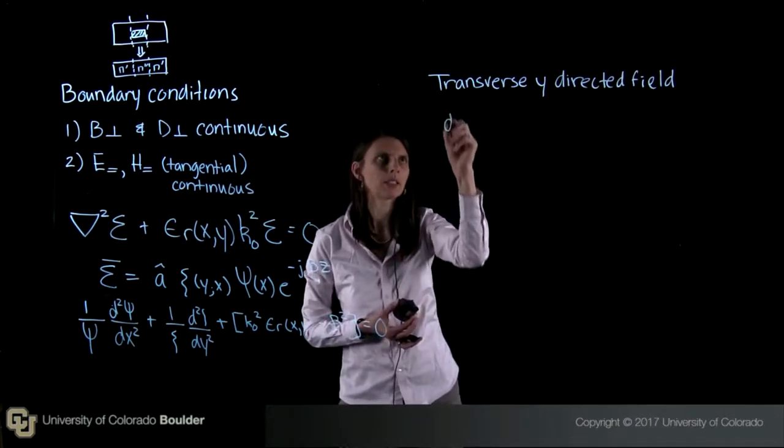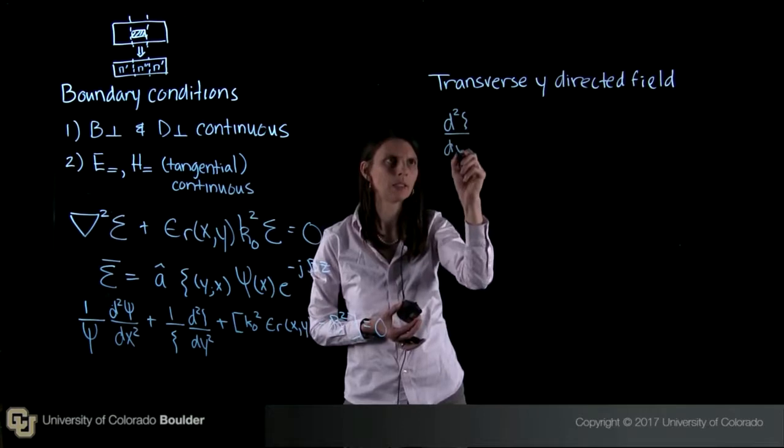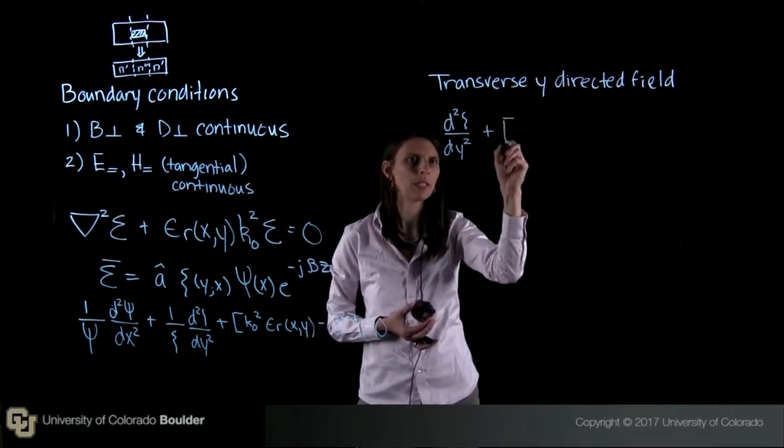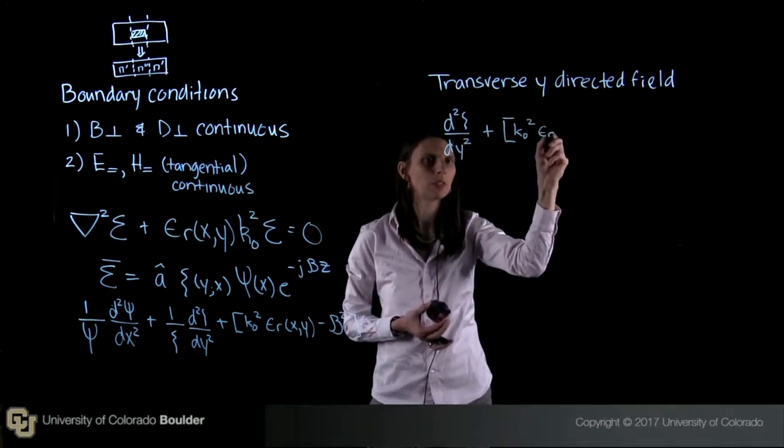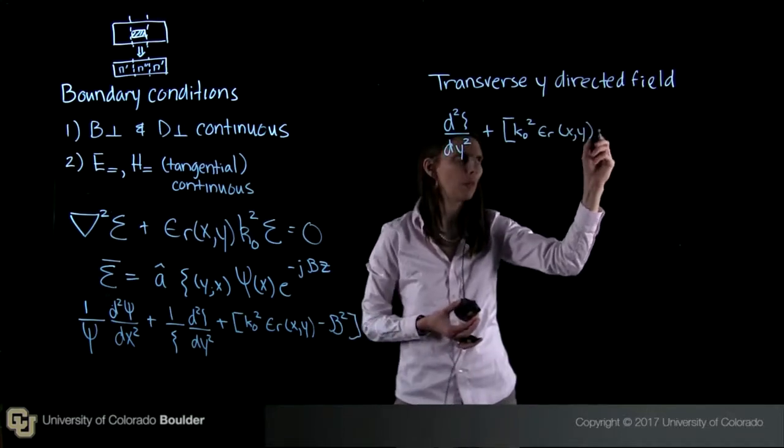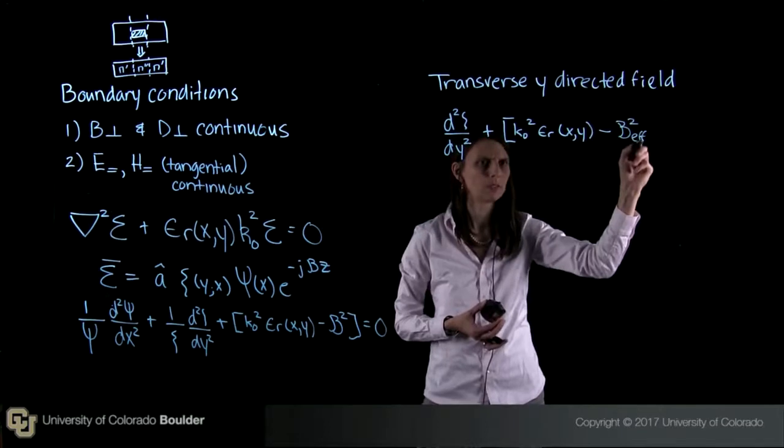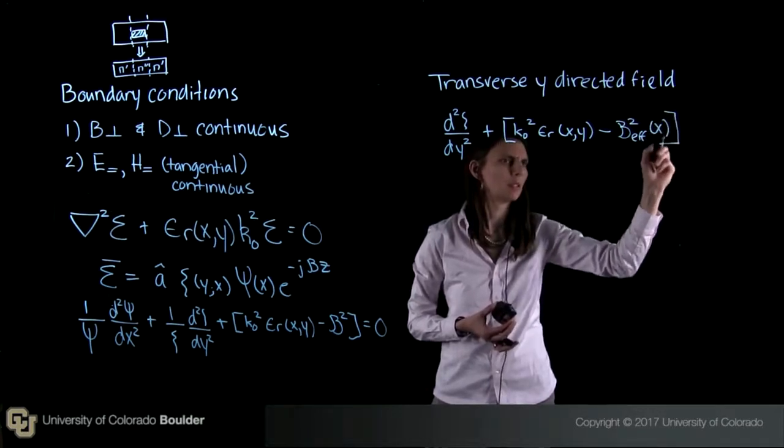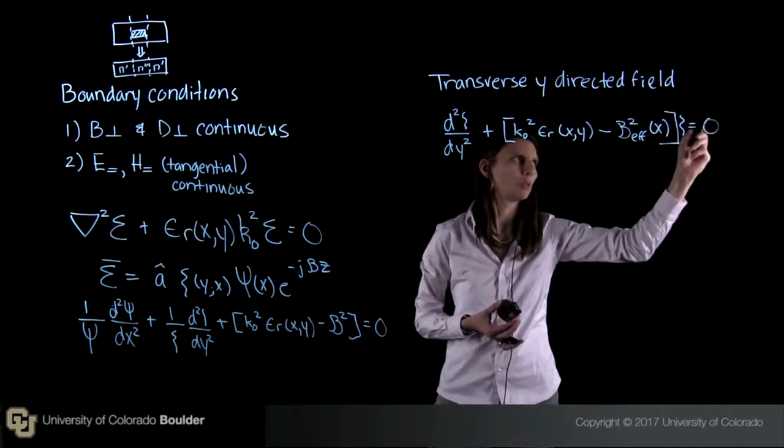So it's going to be the second derivative of this variable with respect to y and then plus here we're going to have k0 squared epsilon r of x comma y minus beta squared effective of x and then multiplied by this variable equals 0.